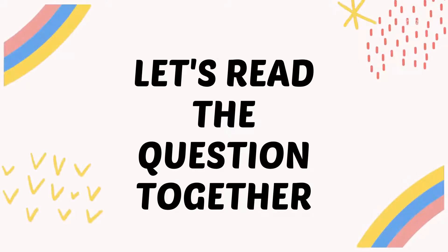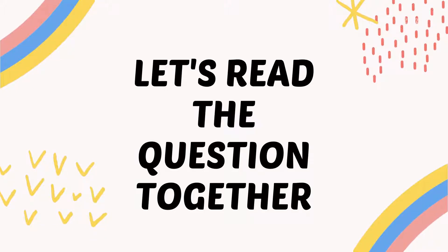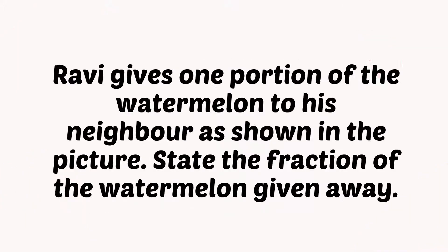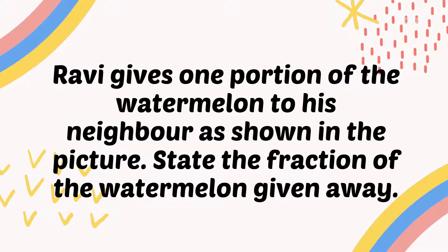Now let's begin by reading the questions together. Ravi gave one portion of the watermelon to his neighbor. As shown in the picture, state the fraction of the watermelon given. Before that, you may refer to your Mathematic Workbook Part 2 and turn to page 6.